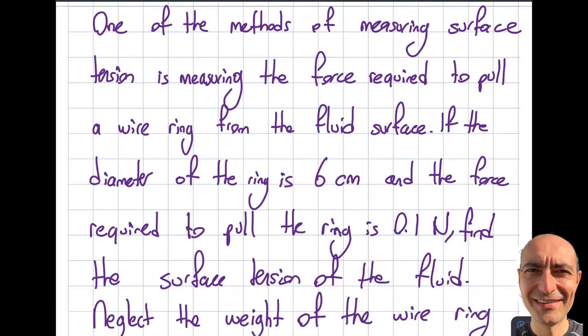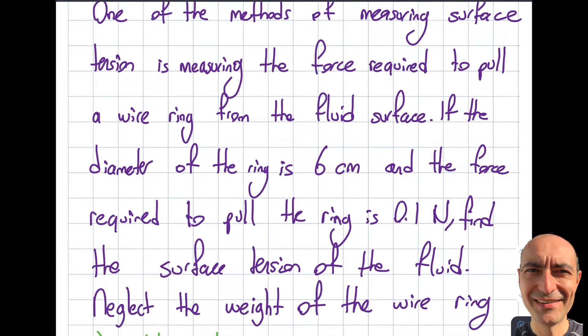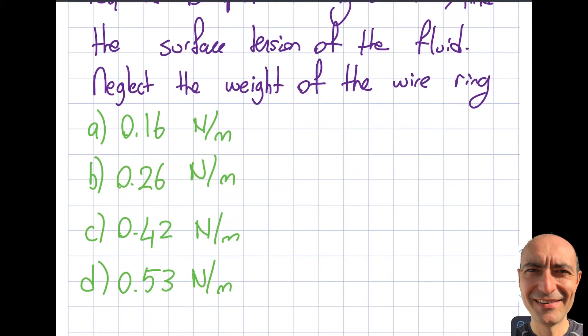If the diameter of the ring is six centimeters and the force that I need to pull is 0.1 newtons, find me the surface tension of the particular fluid. Obviously, the gravity and the weight of the wire ring may play a role, but they are typically much smaller than the surface tension force, so you can safely neglect it. These are the a, b, c, d choices that are given to you.